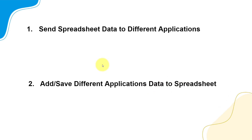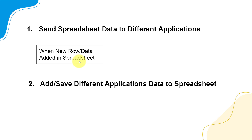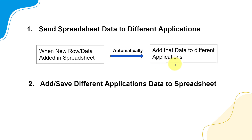Let me explain in detail. Let's say a new row — a new data — is added into your spreadsheet application. It could be Google Sheets, Microsoft Excel, Airtable, Stagby, or anything. You can easily send that data and add it to a different application, such as an email marketing software, a CRM application, or a task management software. This is the first use case.